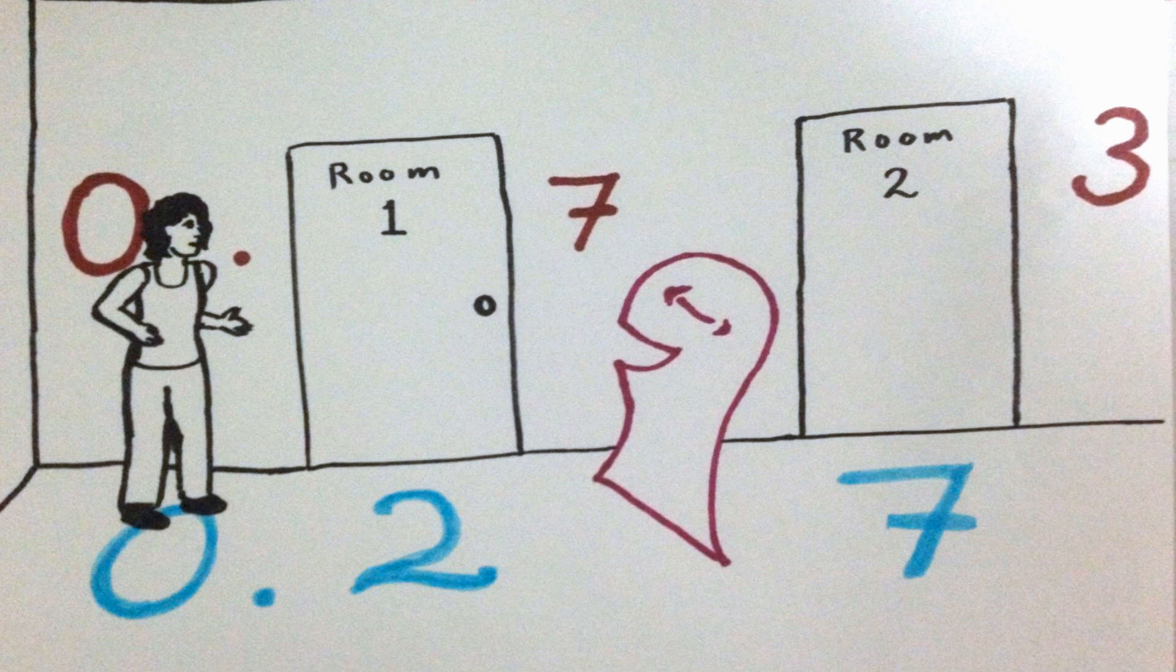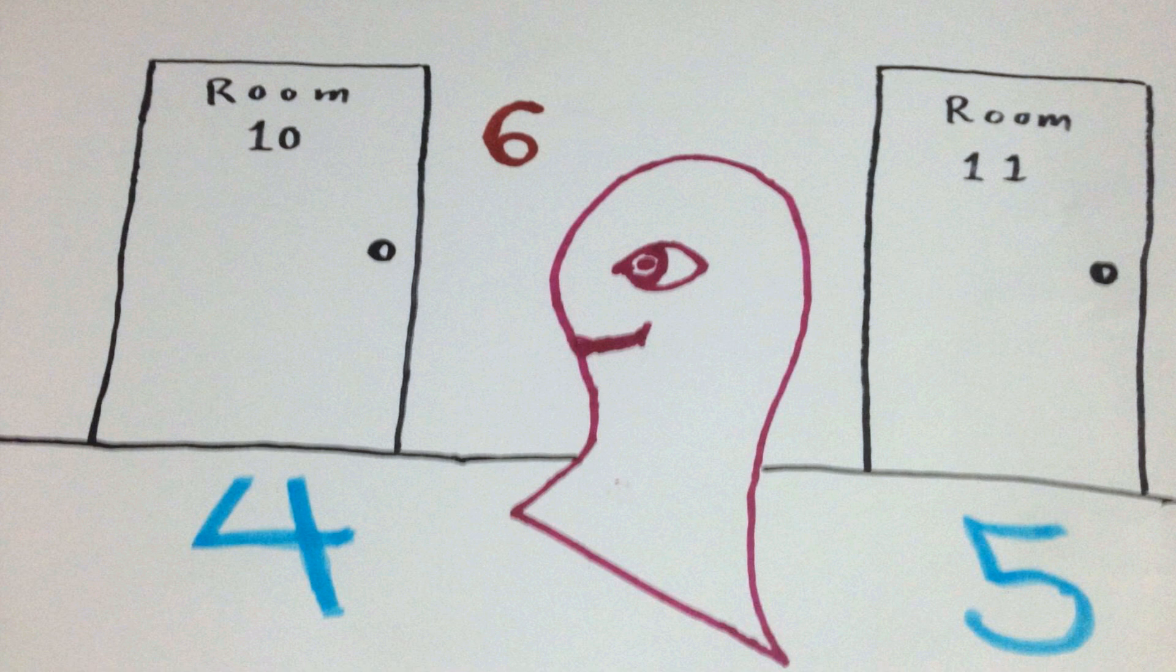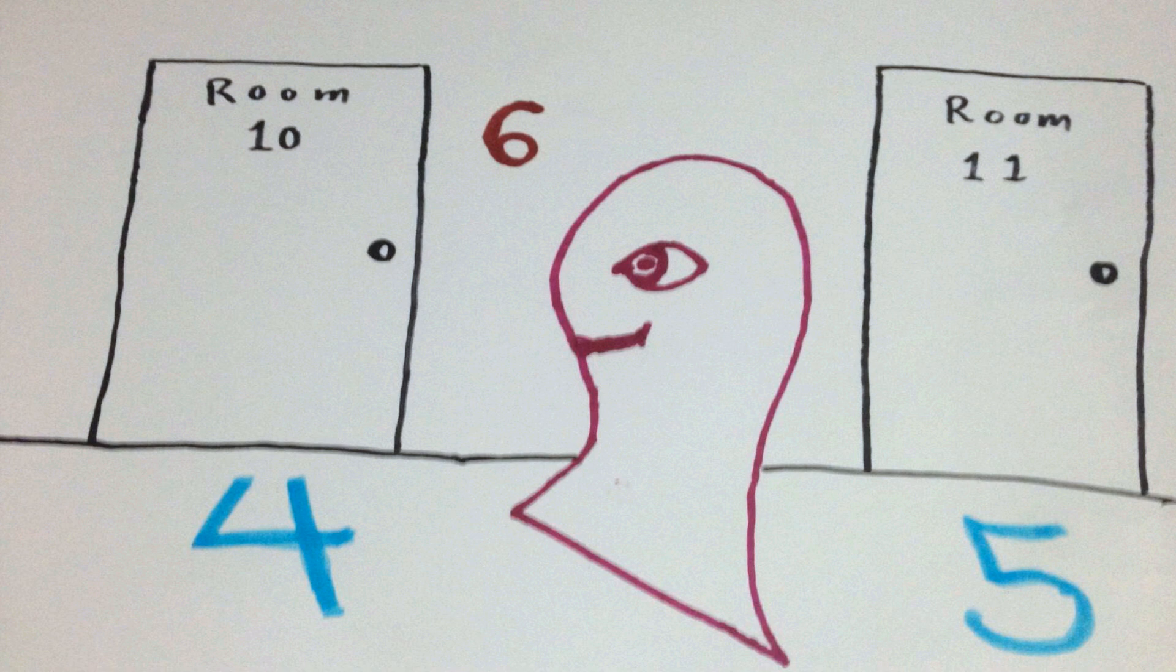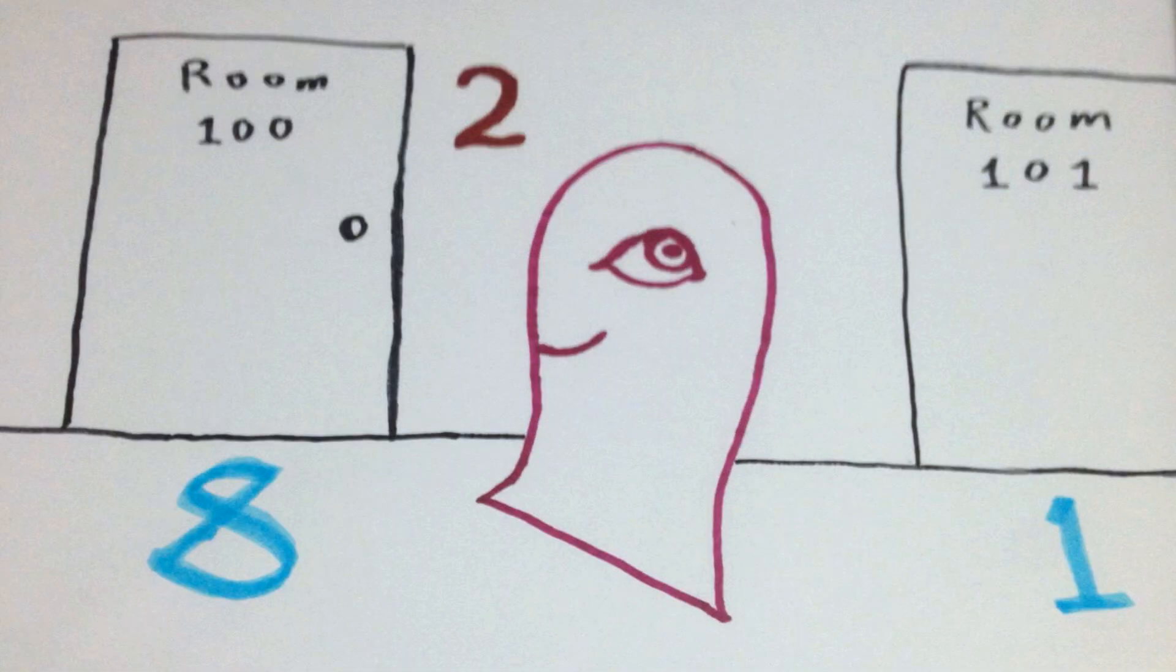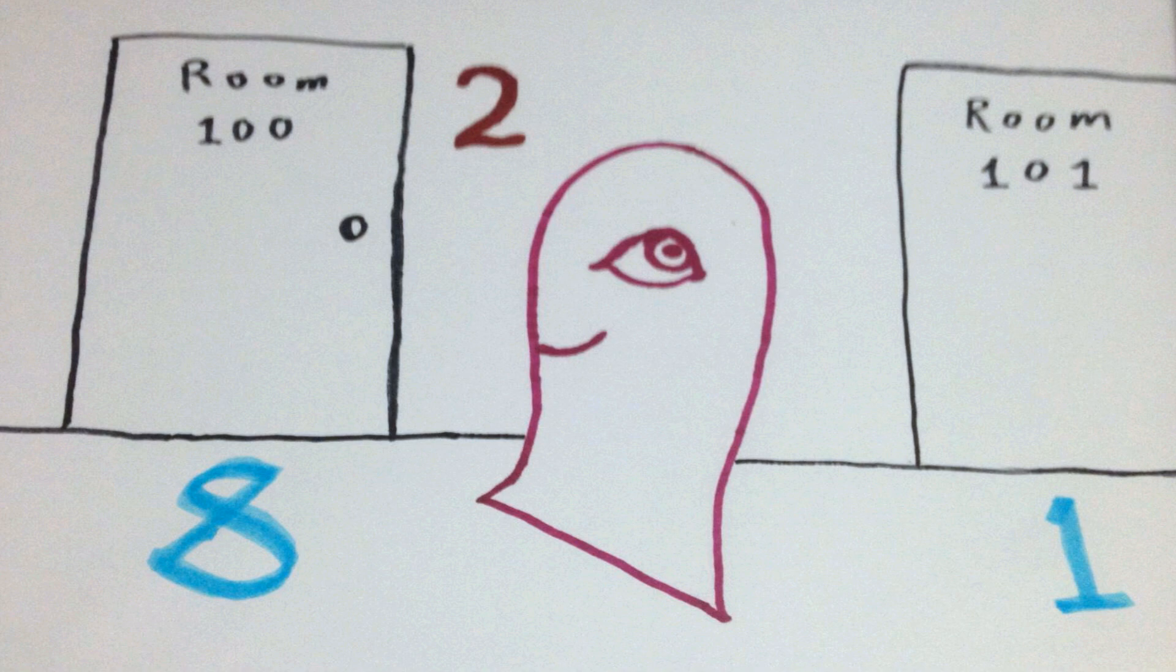You see, you say to the scientist, the coach, and the president, Visitor can't be the guest staying in any room, for similar reasons. The guest in room 10 has a six as their tenth digit, and Visitor does not. The guest in room 100 has a two as their hundredth digit, and Visitor does not.